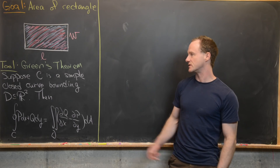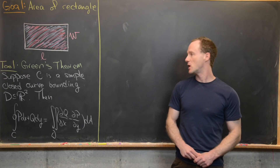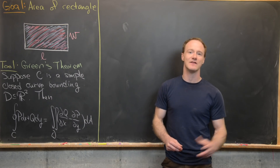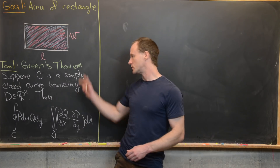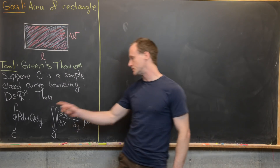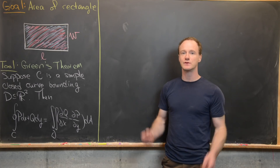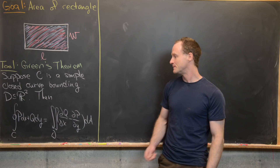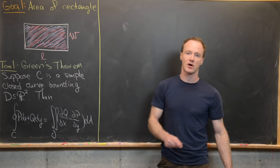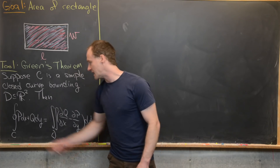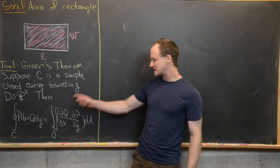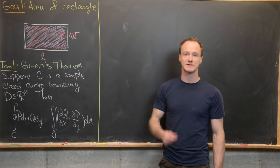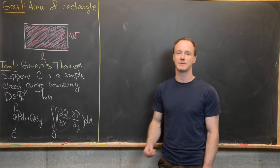Let's recall what Green's theorem says. Suppose that C is a simple closed curve bounding a region D in the plane — and you also need to assume that P and Q have continuous partial derivatives on an open region containing D. Then the line integral over the curve C of P dx plus Q dy equals the double integral over region D of the partial of Q with respect to x minus the partial of P with respect to y.